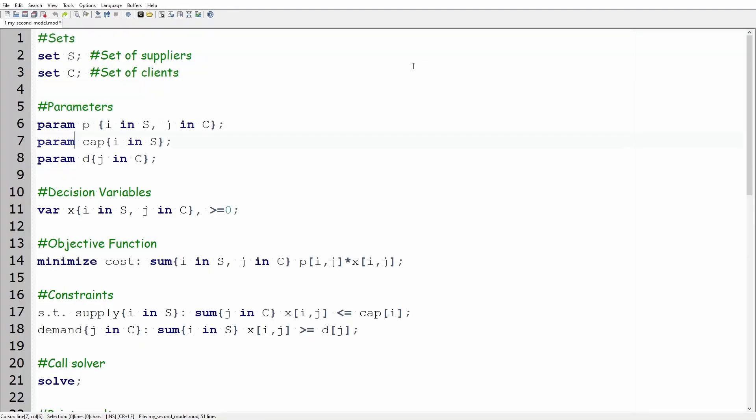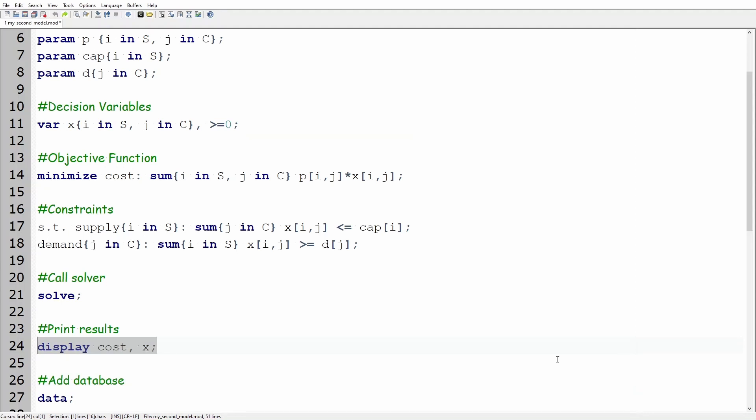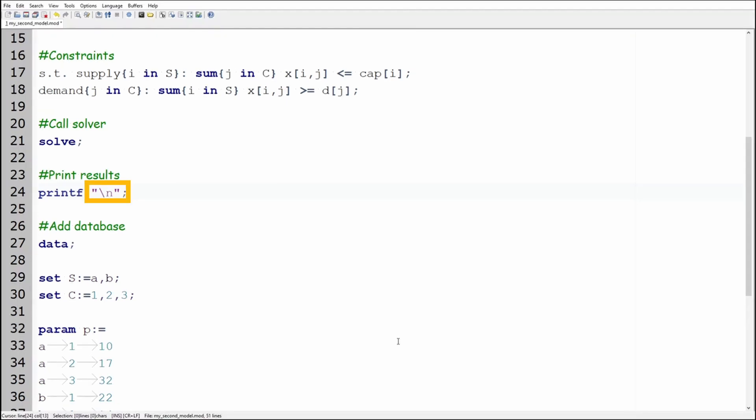Let's go back to our code and erase the display statement on line 24. I would like you to write printf, space, quotation mark, backslash n, quotation mark and semicolon. The text within the quotation mark is what Gusek will print at the terminal. The backslash n tells Gusek to go to the next line.